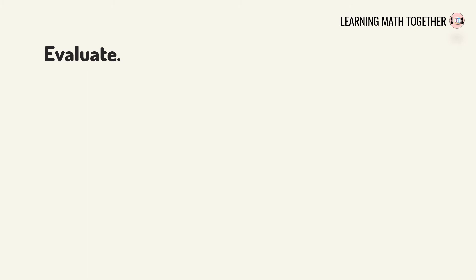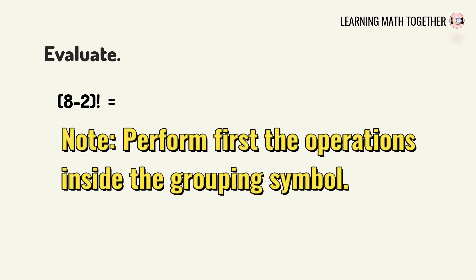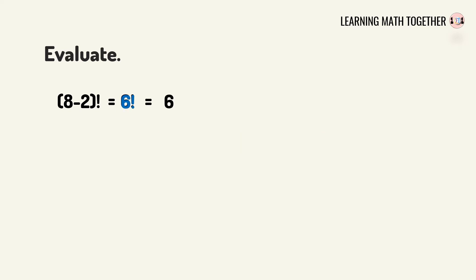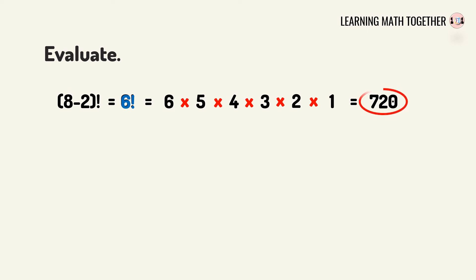Let us evaluate more factorial notation. The first example is (8 minus 2) factorial. We subtract 2 from 8 first, giving us 6 factorial. Then we expand 6 factorial: 6 times 5 times 4 times 3 times 2 times 1. Multiplying all these numbers, 6 factorial is equal to 720.